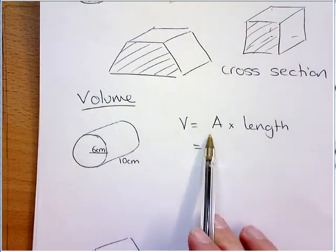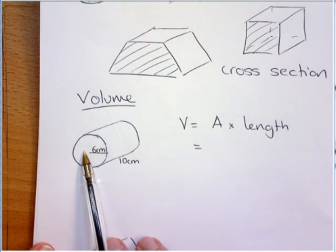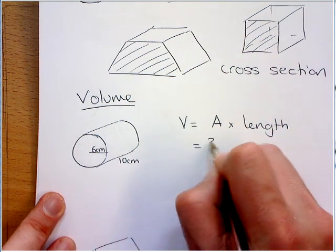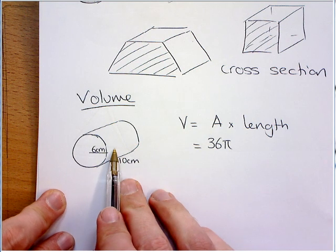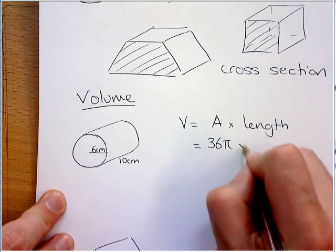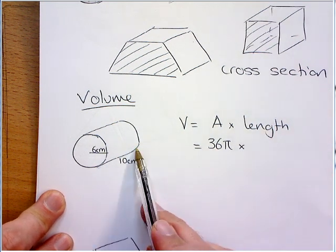So, because I've already worked out the area of this one, I'm just going to use that. So, that was 36 pi. And we're timesing it by the length of this prism. In this case, you can see it is 10.